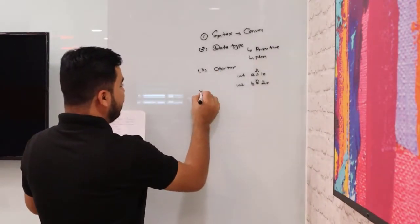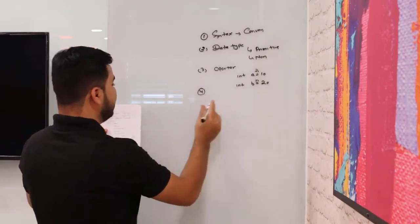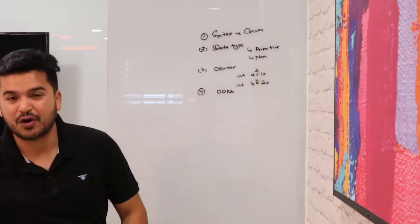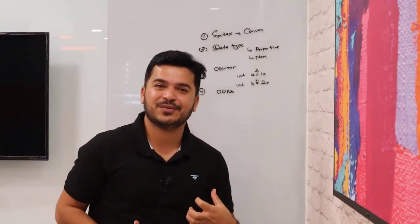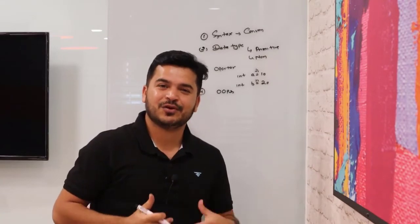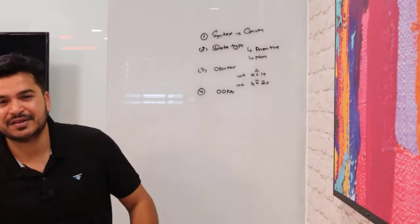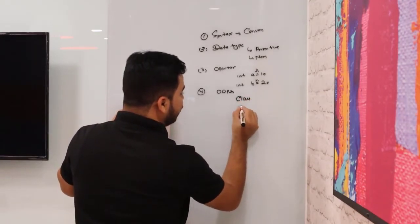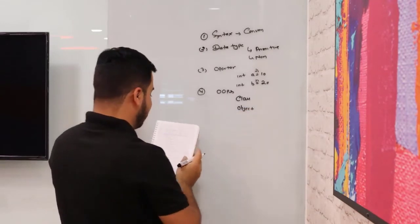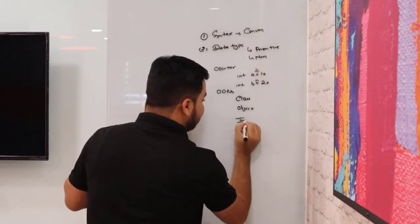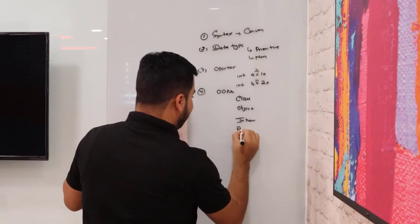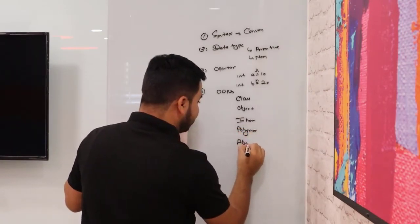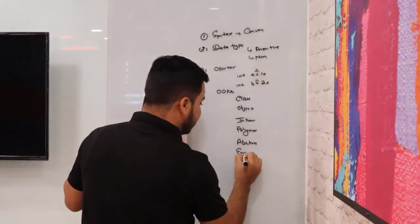Once you understand the operator part, you need to start with OOP concepts — object-oriented programming. You need to understand what an object is, but before that you need to understand what a class is. Inside OOP concepts, you need to cover classes, objects, and the different OOP pillars: inheritance, polymorphism, abstraction, and encapsulation.